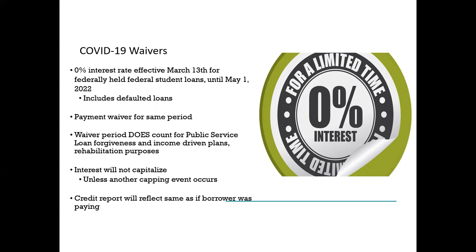The COVID-19 waivers started on March 13, 2020. As of right now, they're due to end on May 1st of this year. There's some chatter they could be further extended — I am of the opinion you should plan for the worst and hope for the best. With the midterms coming up and depending on what's happening with the economy and the Build Back Better Act, it's not impossible they'd extend beyond May 1. But as of right now, there's no indication they're going to. We're going to run on the assumption that all student loans will be back in repayment as of May 2022.